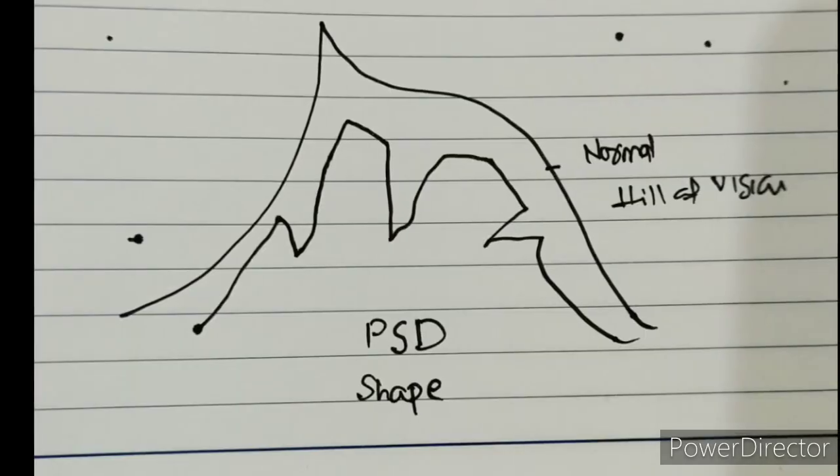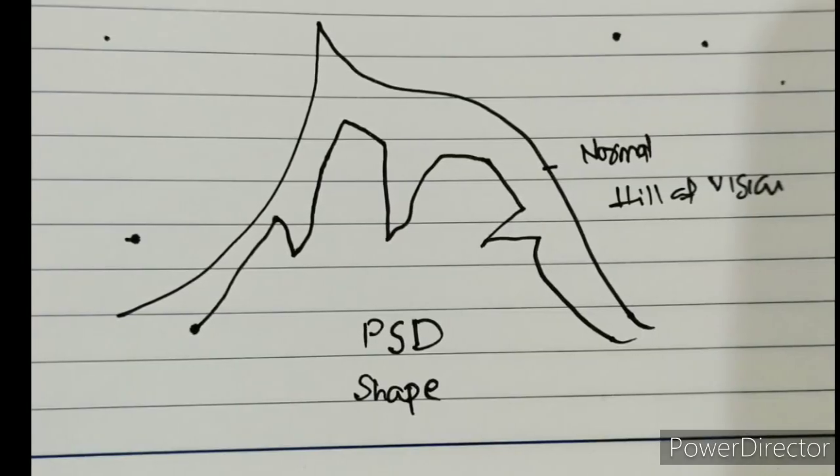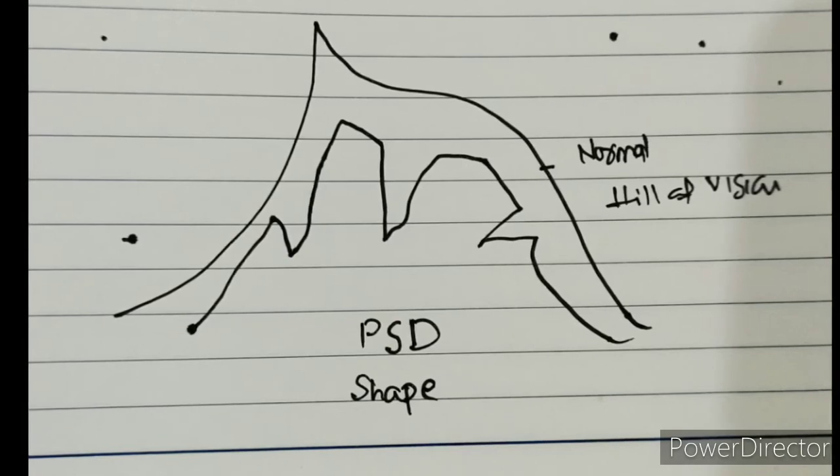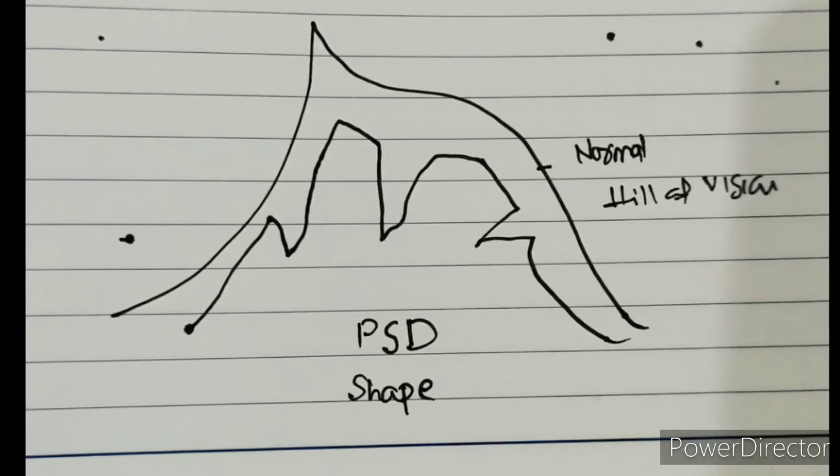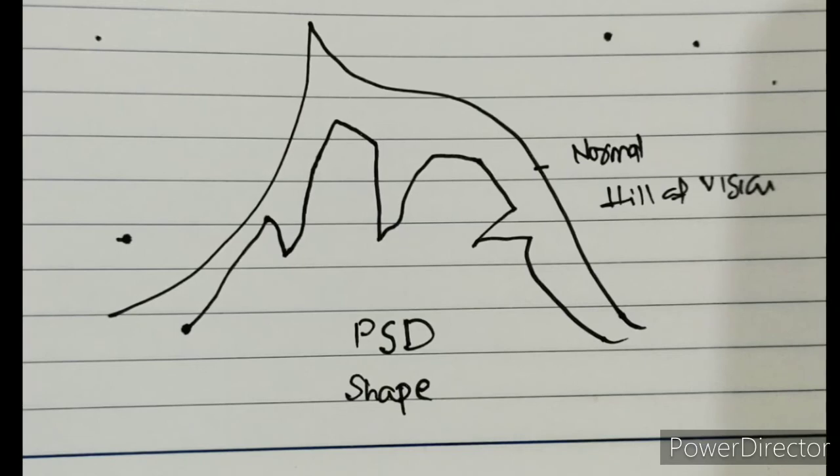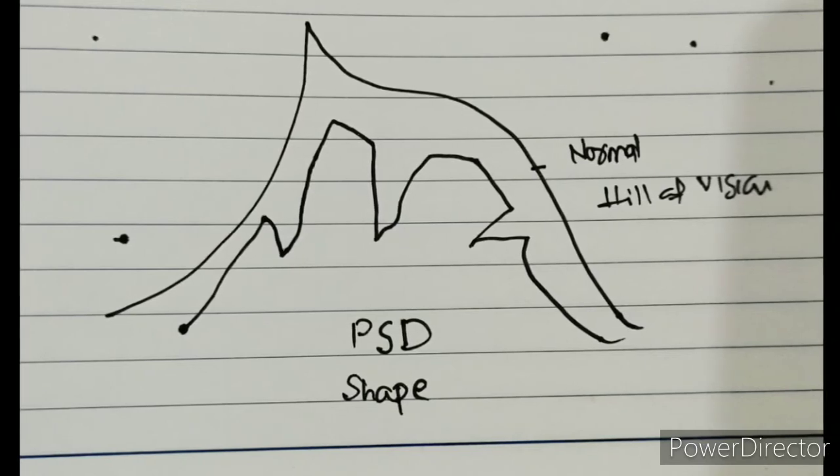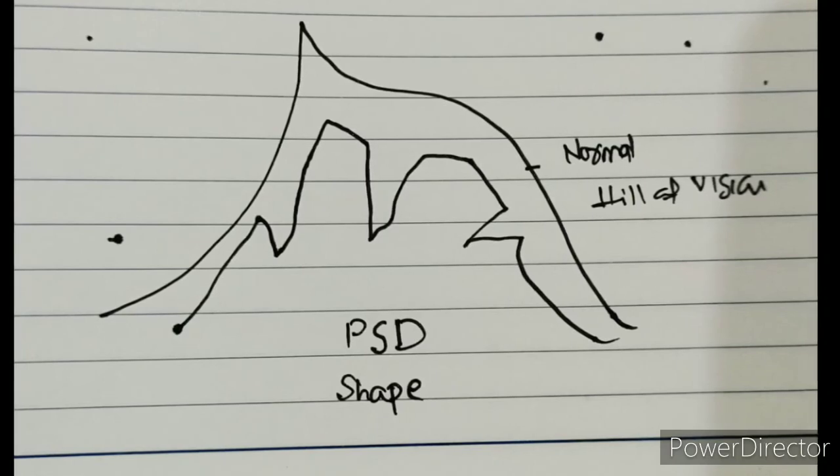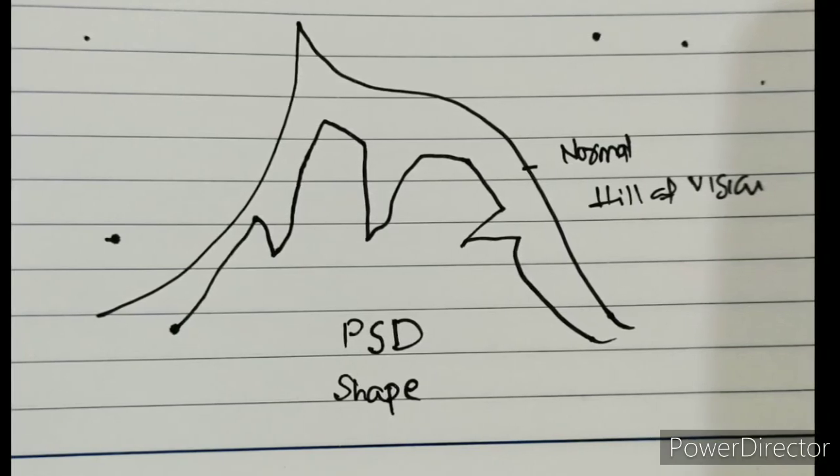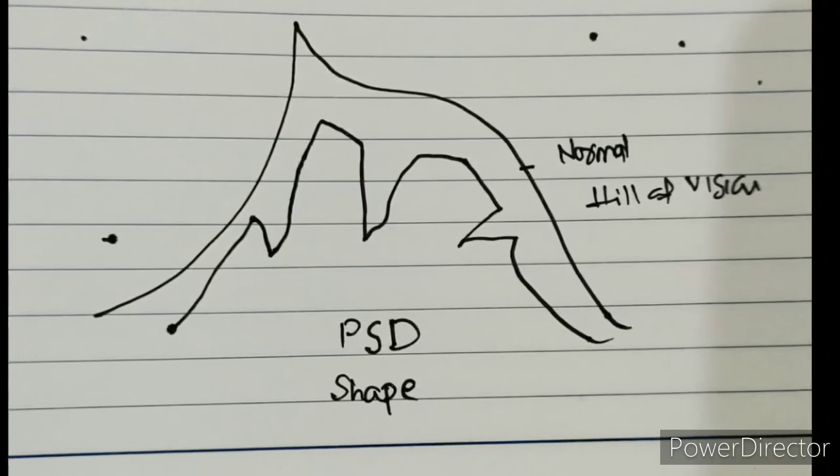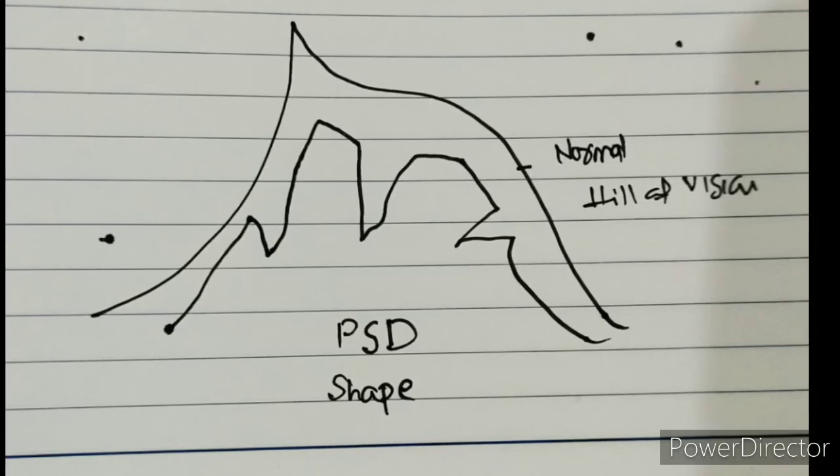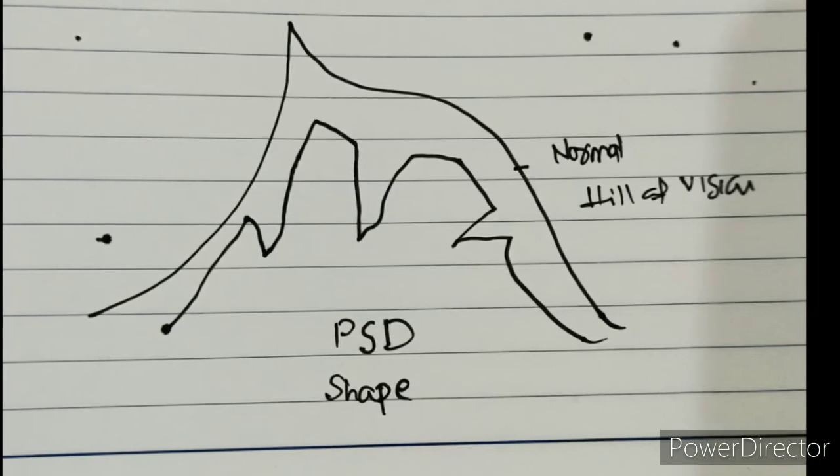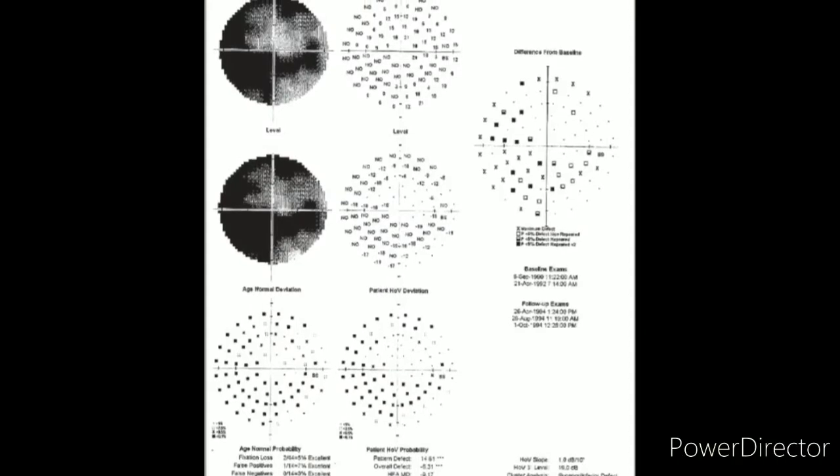Then comes the pattern standard deviation. It is actually a standard deviation which will be zero if all values are similar in sensitivity. If few values are too much deviated from the rest of the group, standard deviation will be high. So pattern standard deviation gives us the shape of the hill of the vision. It should be less than four. Mean deviation should be within six.